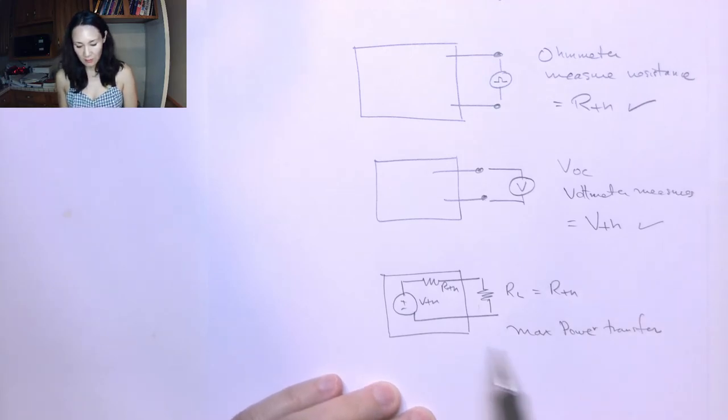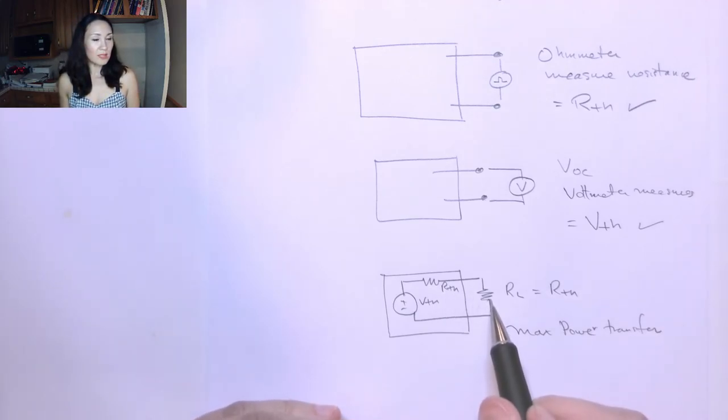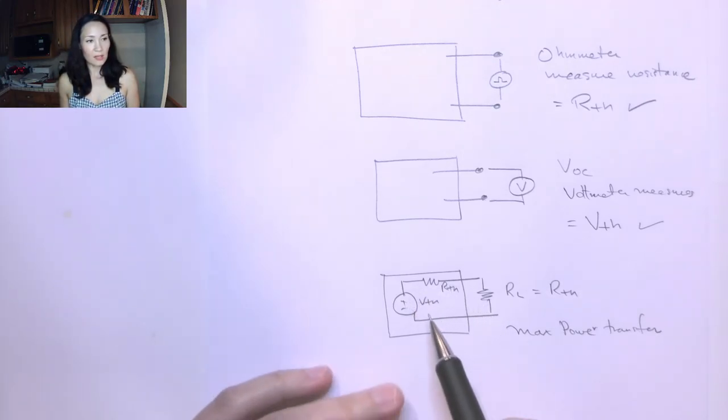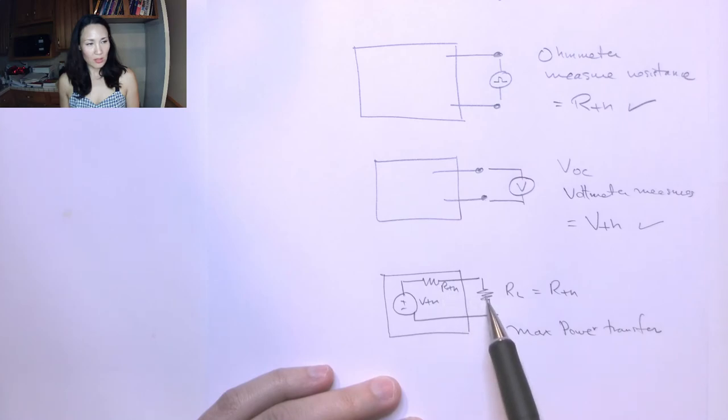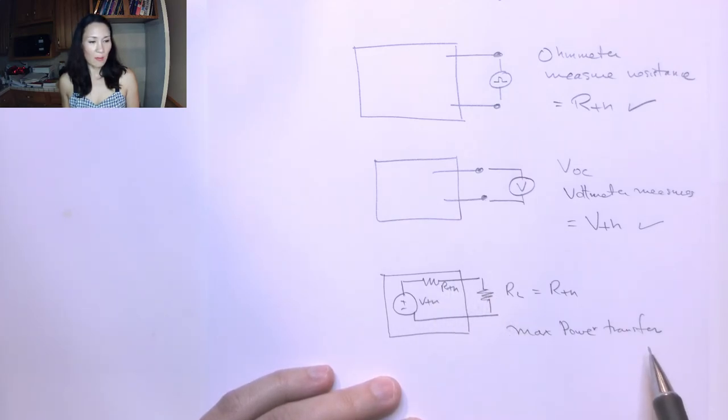That basically means you have the optimal resistance connected to this circuit that's going to provide an equal voltage drop between these two, and the highest amount of current possible to give you the maximum power transfer.